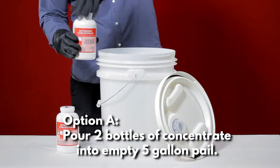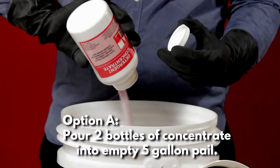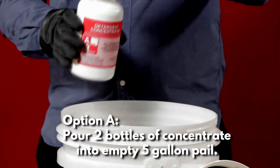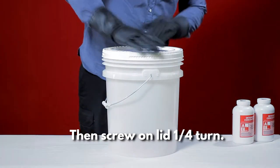Step 1. Pour two bottles of concentrate into an empty 5-gallon pail. Then, screw on the lid a quarter turn.